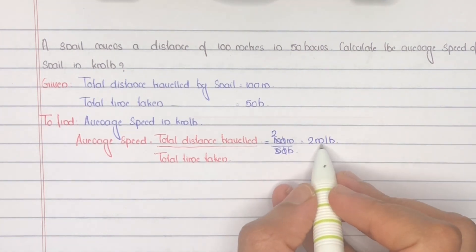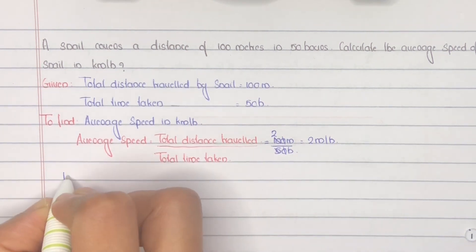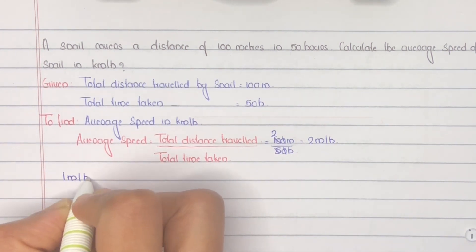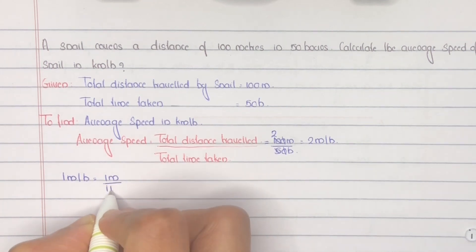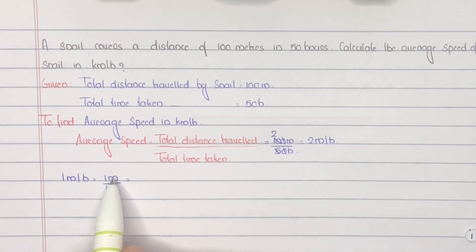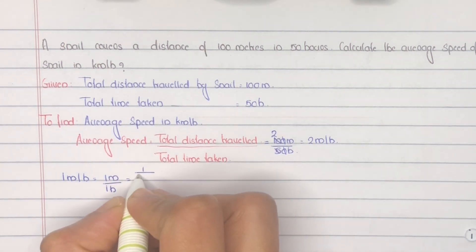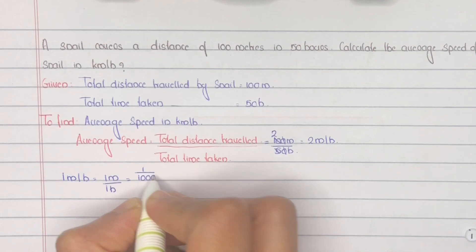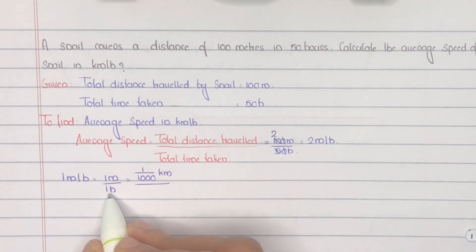And we need to find the value in kilometers per hour. So, 1 meter per hour equals 1 meter divided by 1 hour. Our aim is to convert meters into kilometers. We know that 1 meter is equal to 1/1000 kilometer. So, 1 meter per hour equals 1/1000 kilometers per hour.